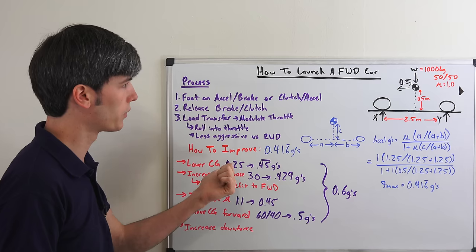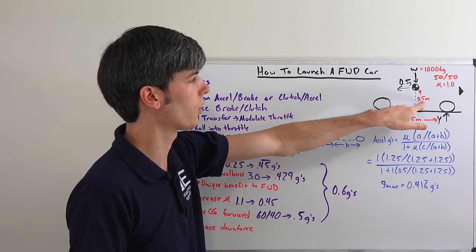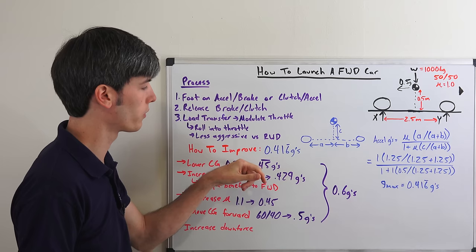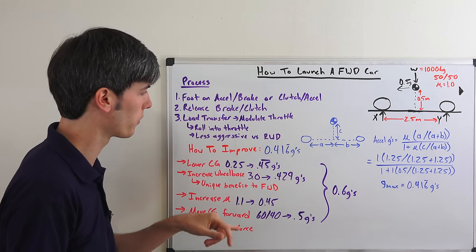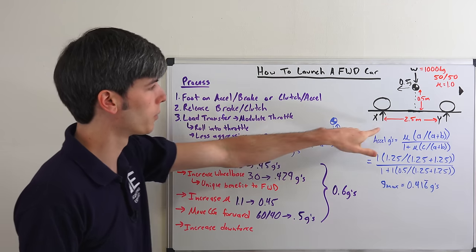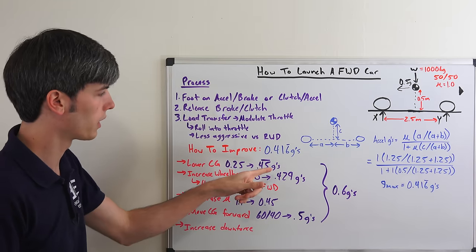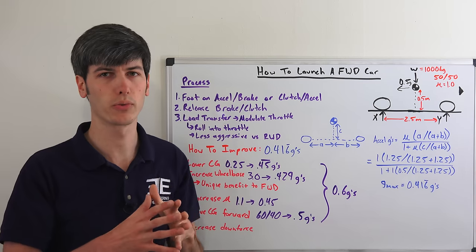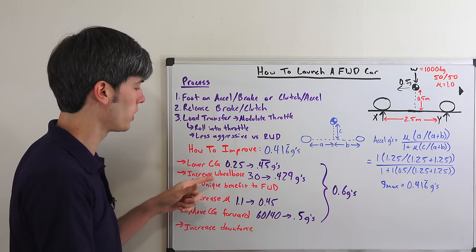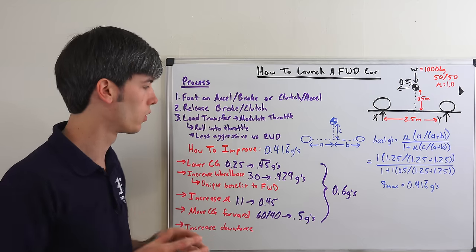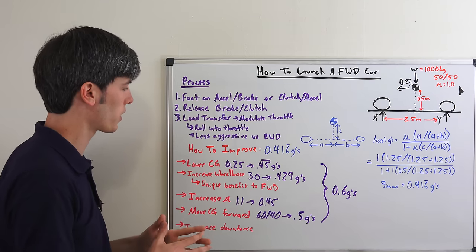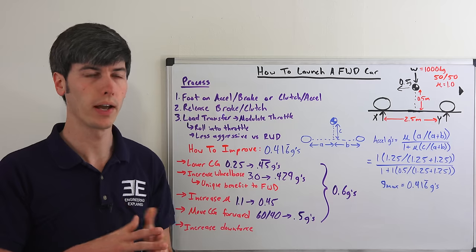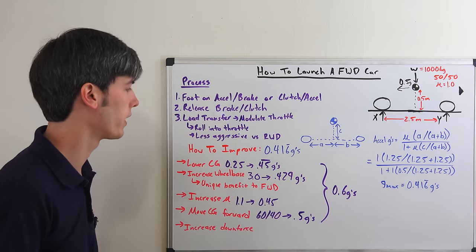So we can lower the center of gravity. So for example if we take this which is at half a meter currently and drop that center of gravity down to a quarter of a meter, that's going to allow us to accelerate at 0.45 repeating G's. So a slight increase over the 0.416 there. We could also increase the wheelbase. So if we go from 2.5 meters to 3 meters, we can increase the maximum acceleration to 0.429 G's. And these are unique benefits to a front-wheel drive vehicle because if you lower the CG or increase the wheelbase on a rear-wheel drive vehicle, you're going to be decreasing the maximum acceleration. So it's kind of cool that front-wheel drive vehicles do have that benefit where it's a double benefit of lowering your CG and increasing the wheelbase. It's going to improve handling, but it's also going to improve the maximum rate at which you can accelerate.